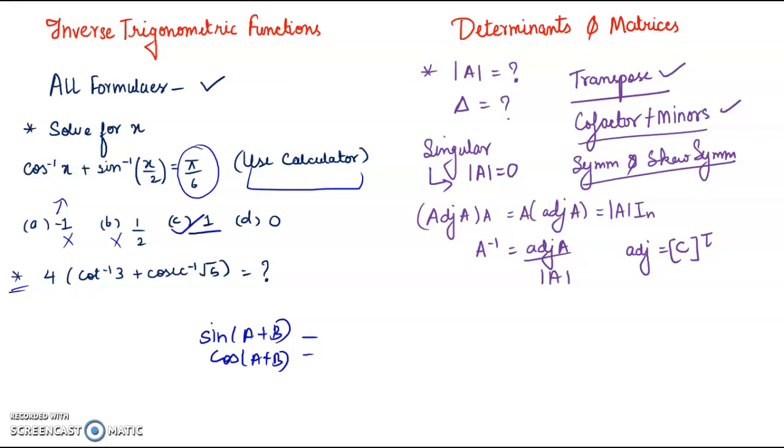Again, there is a question which can be done with the help of calculator: cot⁻¹(3) and cosec⁻¹(√5), multiply by 4, and you will get the answer.